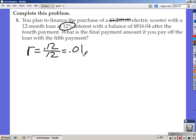The second step you take is finding the interest that you owe on the current balance. The current balance is 816.04 times 0.01, that gives you an interest of $8.16.